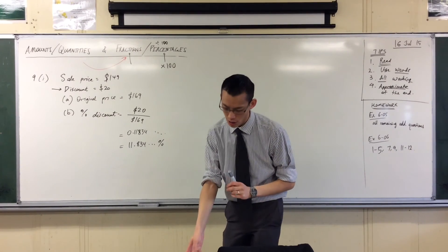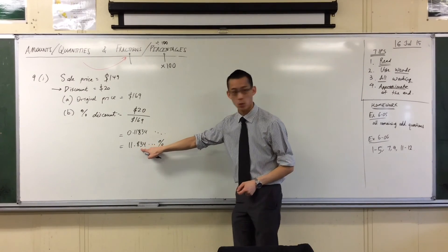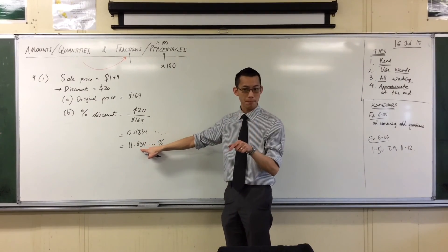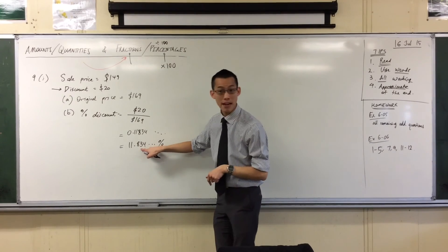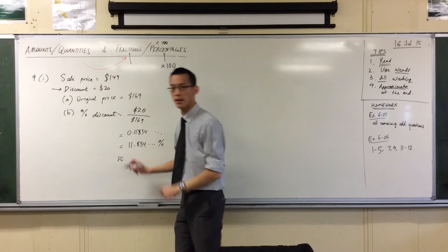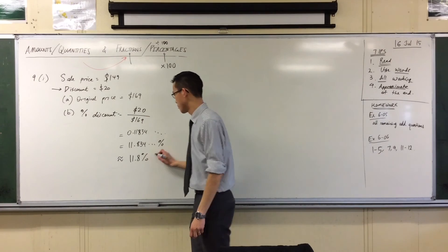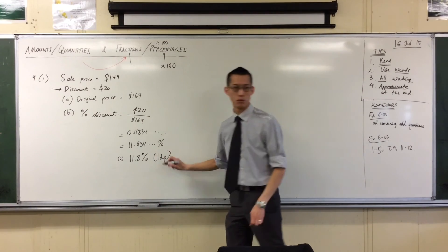What kind of approximation are they asking me for? One decimal place. There's the first decimal place. I look at the next one—does that go up or down? It's a 3, it goes down. So this is approximately equal to 11.8%, one decimal place.